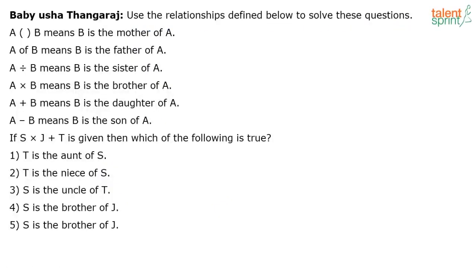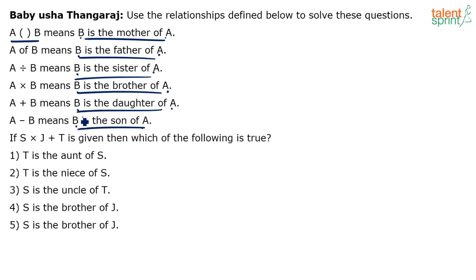Now use the relationships defined by symbols to solve the next question. A in brackets B means B is the mother of A. A 'of' B means B is the father of A. A division B means B is the sister of A. A into B means B is the brother of A. A plus B means B is the daughter of A. A minus B means B is the son of A. The interesting point is that the relationship is always in the reverse direction — it is B to A, not A to B. This is clear and consistent throughout.